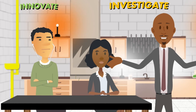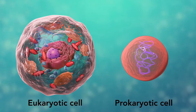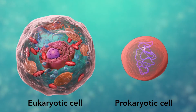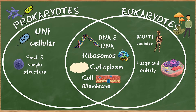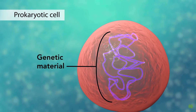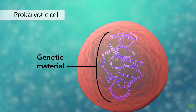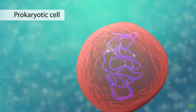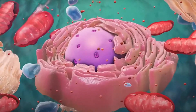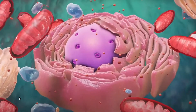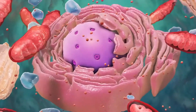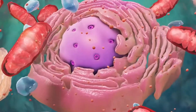Eukaryotic cells tend to be much larger and more orderly. Prokaryotic and eukaryotic cells both have cytoplasm and ribosomes to decode DNA, but prokaryotic cells keep their DNA just floating around in the cytoplasm, while eukaryotic cells have their DNA housed in the grand headquarters — the nucleus.